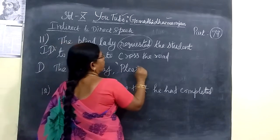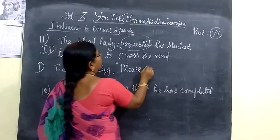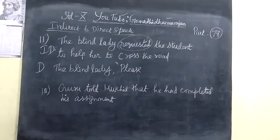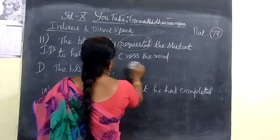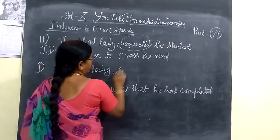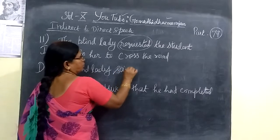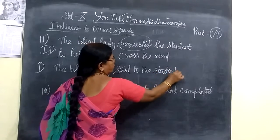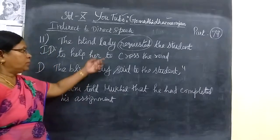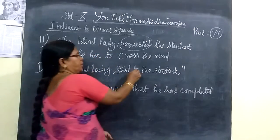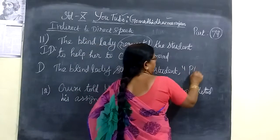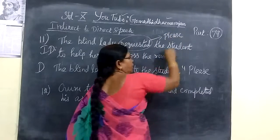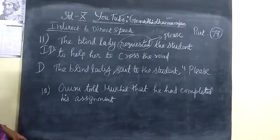So, 'the blind lady' — for 'requested', you are writing 'please'. The student should be addressed. In the request, you are replacing 'requested' with 'said to'. So: 'said to the student' — then put the inverted comma. In the request you are writing 'please'. Then the inverted comma starts. 'To help'.